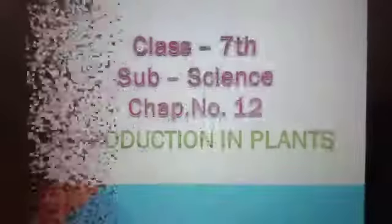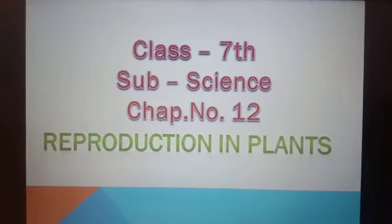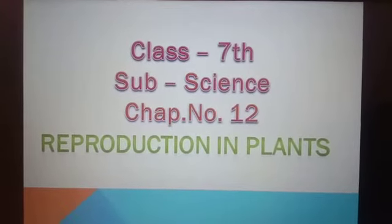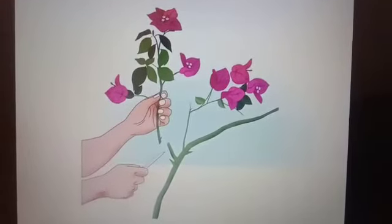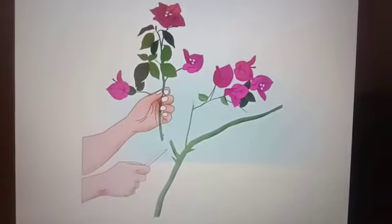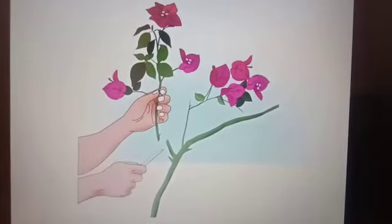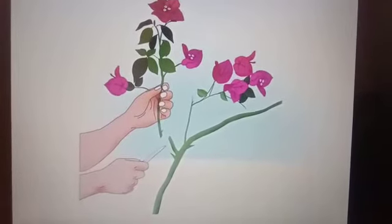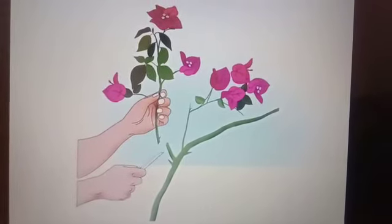Hello students. Yesterday we discussed about the asexual methods of reproduction and today we will start from the artificial vegetative reproduction. Plants can also be propagated by some artificial methods. Such methods are used by the farmers and gardeners to grow a variety of plants. Some methods of artificial propagation are discussed.